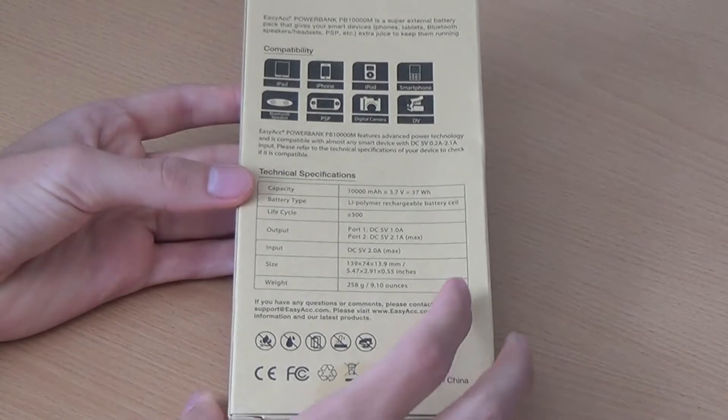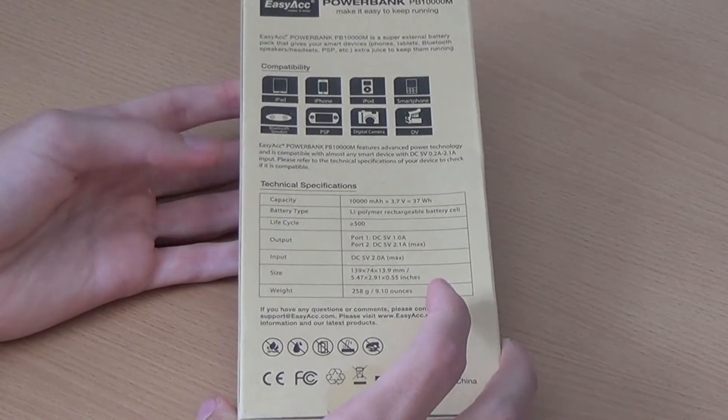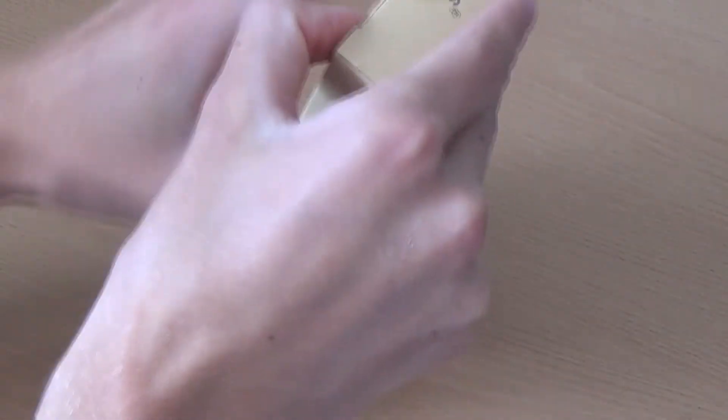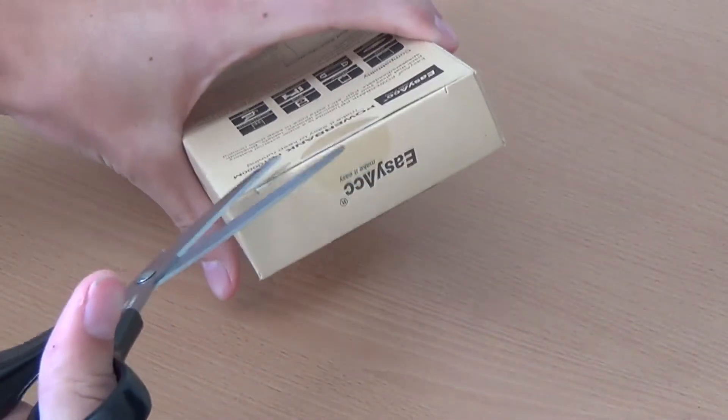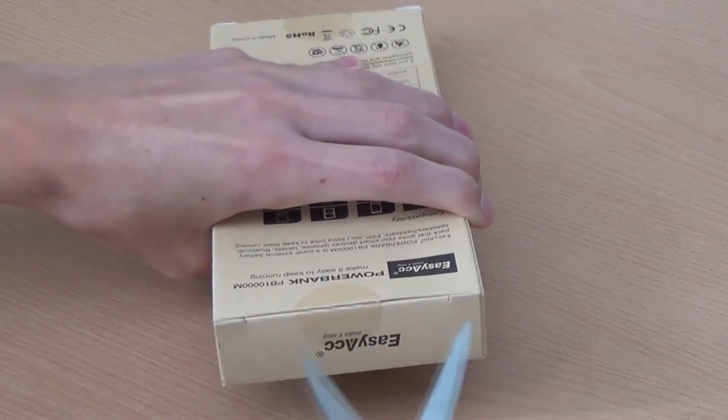So I'm just going to go straight into the unboxing, because the device inside is really what we're looking for. Okay, here we go. Firstly, you've got these little stickers over the top, so I'm just going to get some scissors in there and then open up like this.